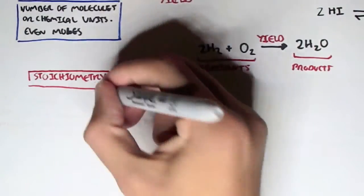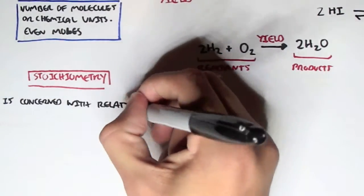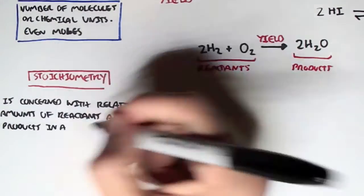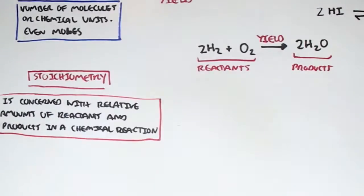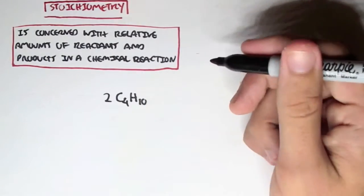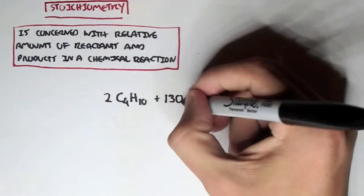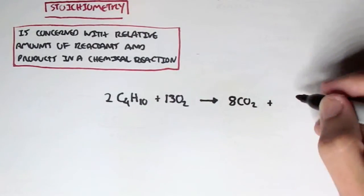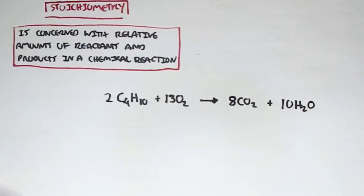Now let's look at stoichiometry. Stoichiometry is concerned with the relative amounts of reactants and products in a chemical reaction. This also involves the coefficient and also the small number right below the elements. For example, here we have two molecules of butane gas. Plus 13 molecules of oxygen gas will yield 8 molecules of carbon dioxide and also 10 molecules of water, H2O.